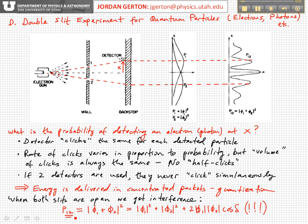P12 is equal to the sum of two amplitudes squared, which when you expand it gives you this interference term here, and it has a cosine delta dependence. Delta is the phase difference between the two waves that are arriving at a particular point, as it was for water waves.